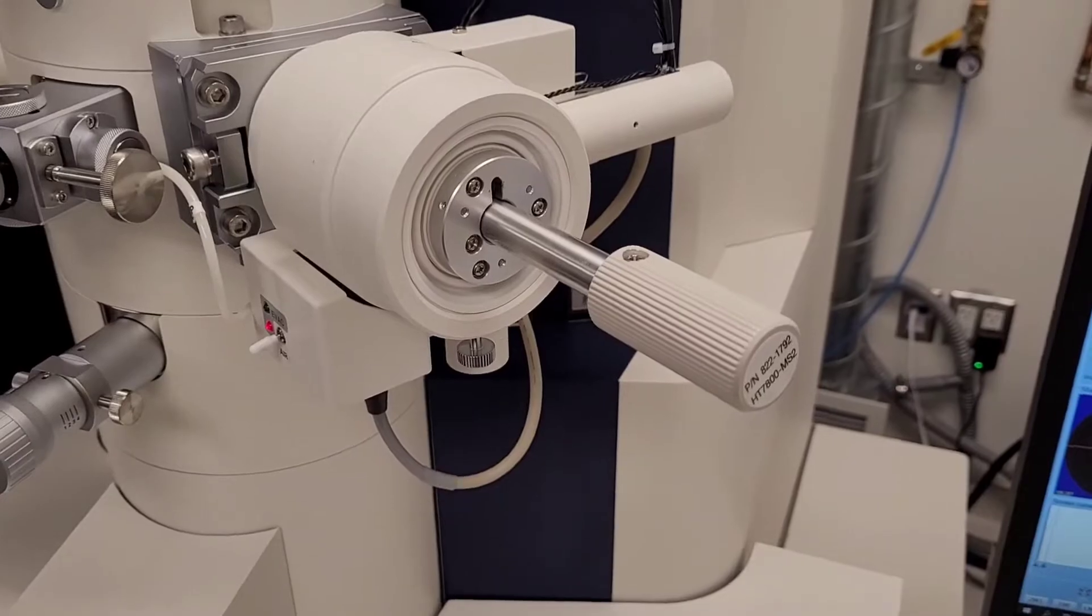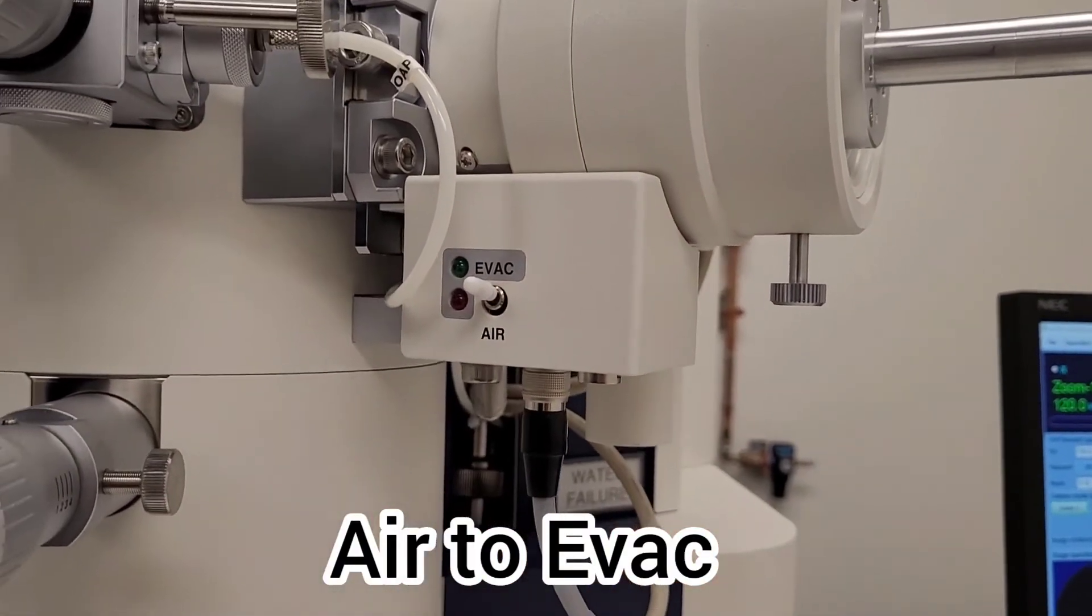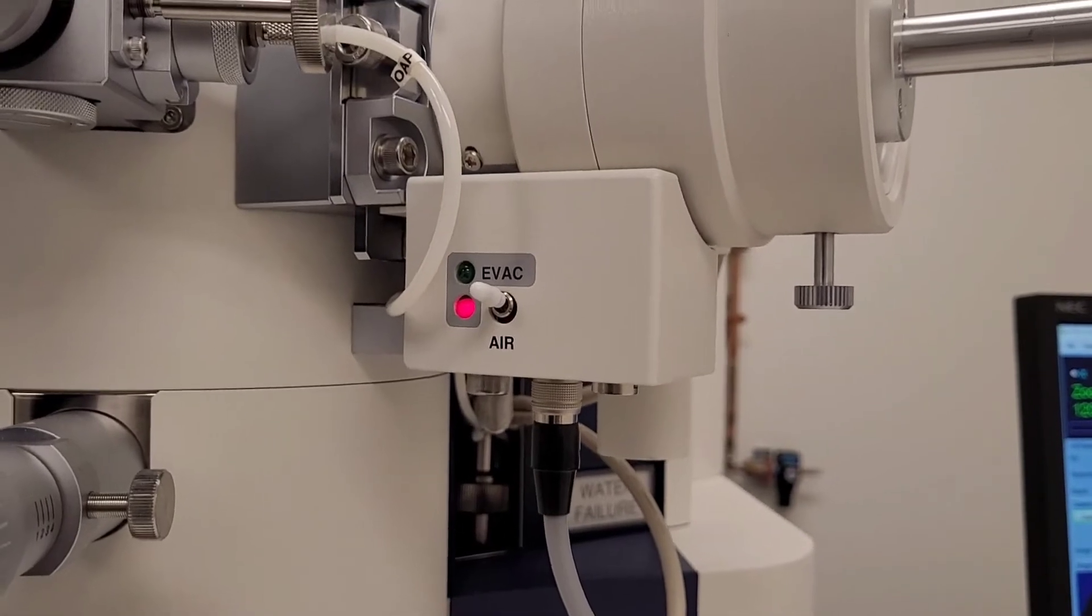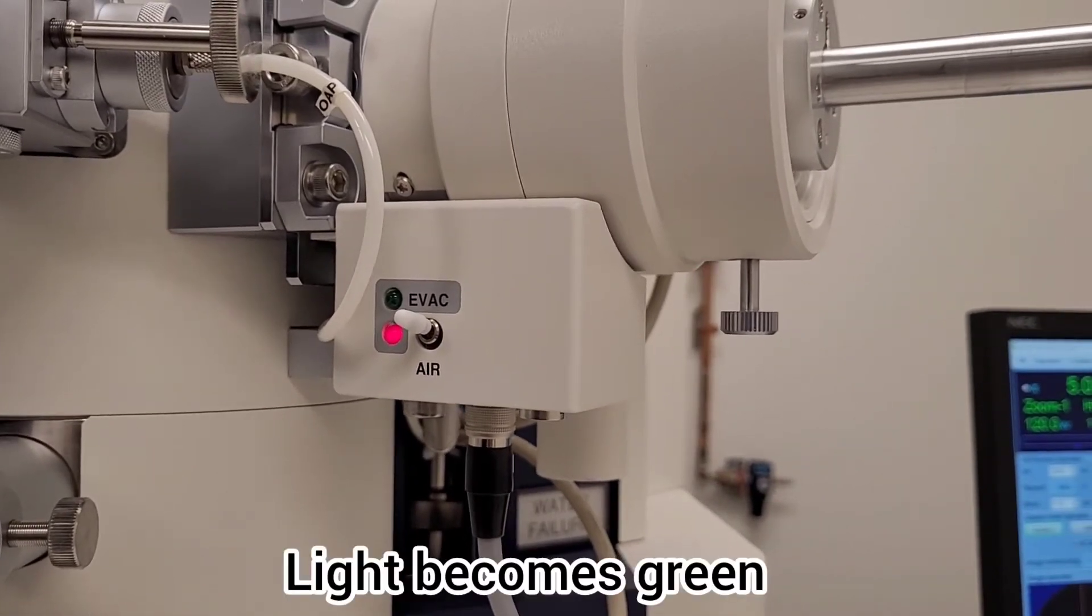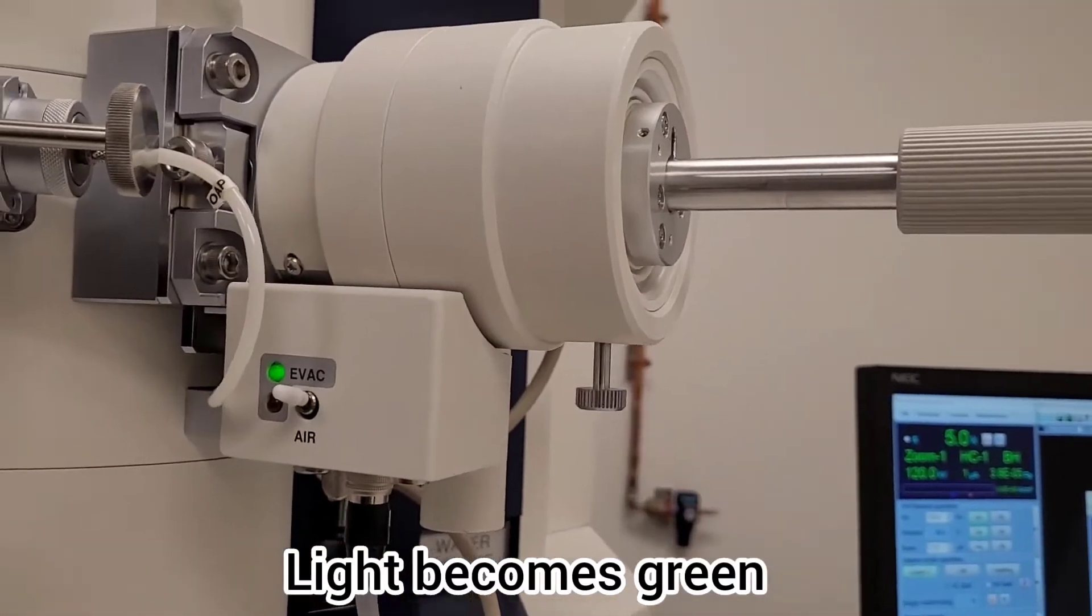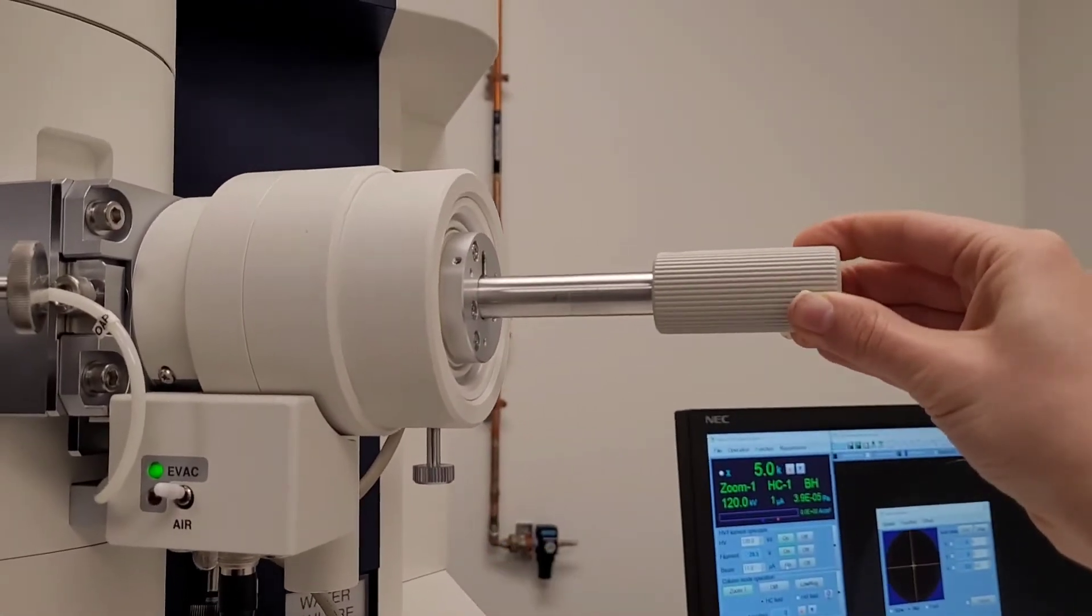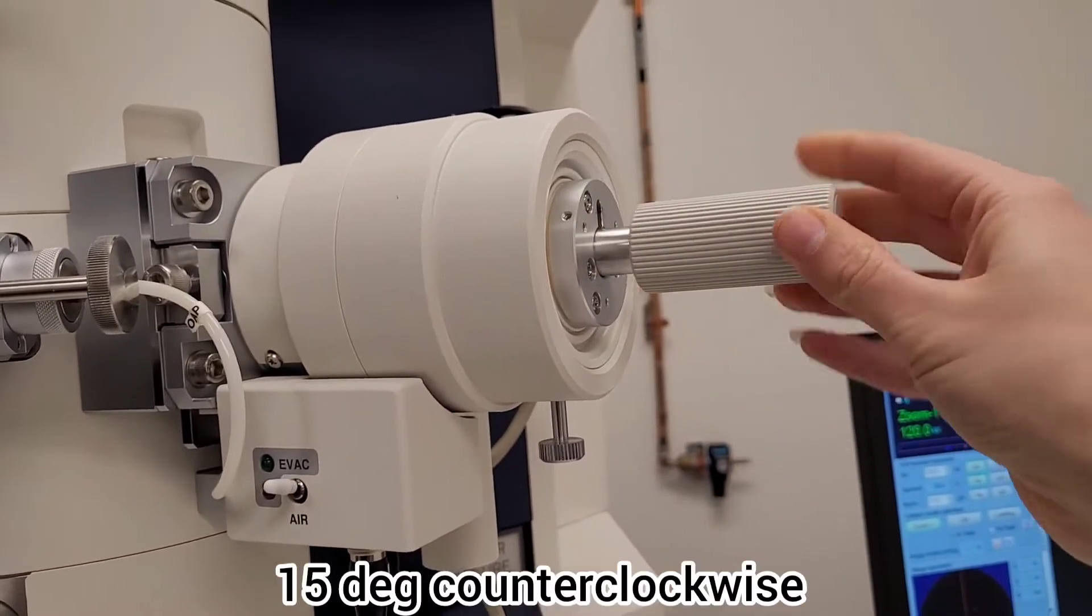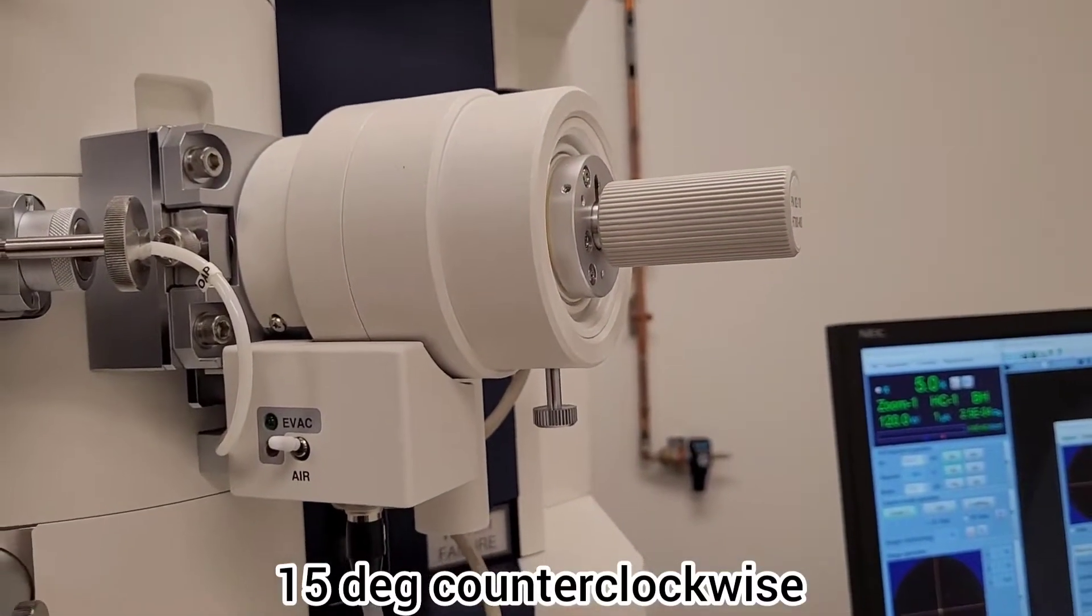Align the notch and then you want to set the air to EVAC. The light will become green. Once that happens, you can turn it 30 degrees clockwise and it will just insert. Then 15 degrees counterclockwise.